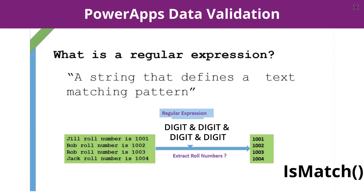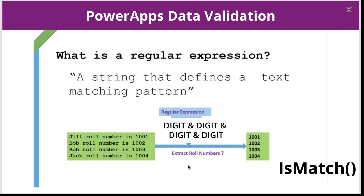This data validation is done in Power Apps using the isMatch function. What isMatch allows you to do is pass it in a value from your Power App — like a text input value — and compare it to a pattern, also called a regular expression. All a regular expression is, if you've never heard of them, is a string that defines a text matching pattern. So if we look at this image here, we might have a case where we have rule numbers — each employee is assigned a rule number that's always going to be a four-digit number, like 1001 to 1004.